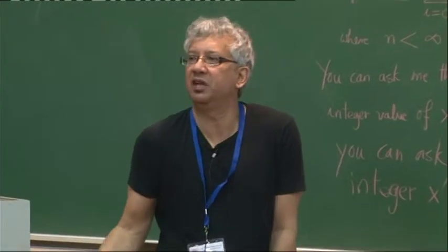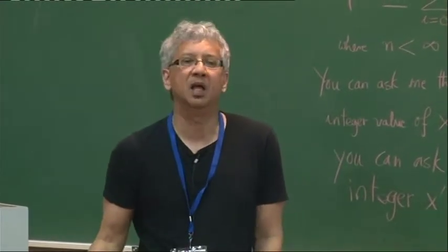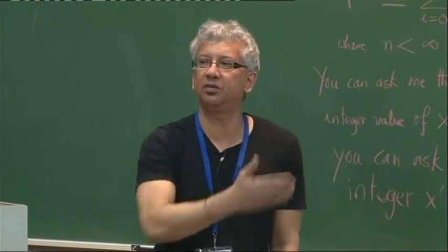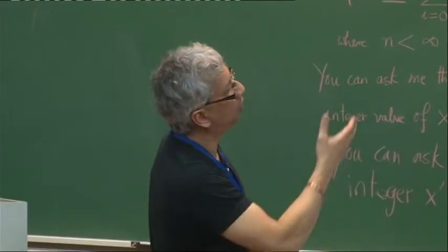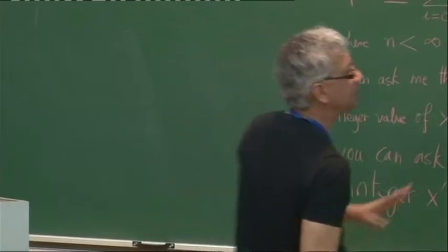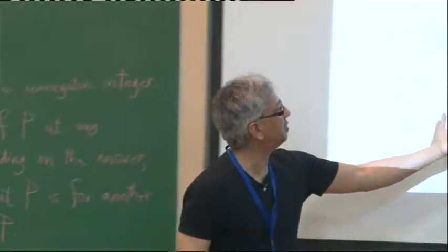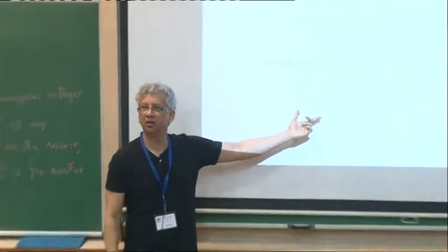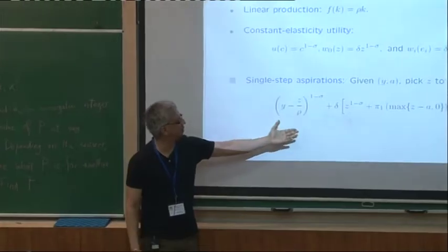There may be a whole bunch of indicators. Delta is like a discount factor. The pi i's are like weights on the successive aspirational utility. And there's a constant elasticity term on top of that. So now what do I do? Nothing different. It's the same problem. It's just a special case.